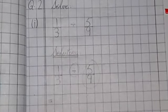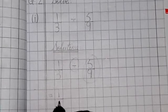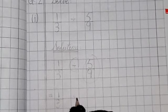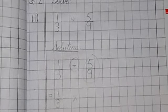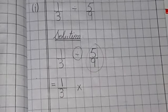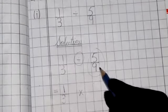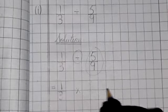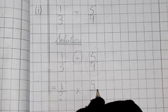Let's start first. 1 by 3, which is already given a fraction, we will write as it is. Divide sign change into multiplication. When divide sign changes in multiplication, and right side is reciprocal, means 9 by 5.